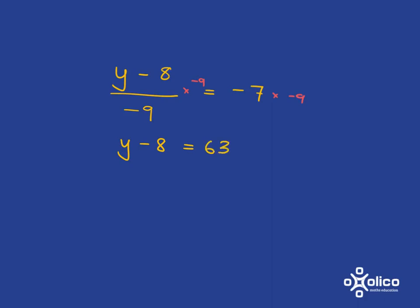And now we're almost done. We want to get y on its own, so we need to add 8 on this side. What we do to one side of the equation, we must do to the other, and we'll end up with the answer y is equal to 71.